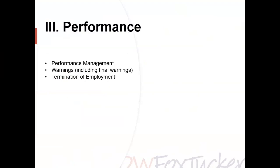The ease with which an employer can establish a valid reason for a performance-based dismissal depends on the nature of the employee's role. A salesperson whose performance is poor has clear measurable criteria — not meeting a budget. But what we deal with in 2023 in terms of performance management is much more subjective criteria. We are dealing with situations where employees will often have a response for any performance issues raised, and particularly as people work more in teams, it makes it much more difficult for an employer to rely upon their role to determine whether performance standards are being met.